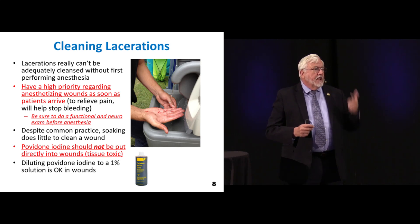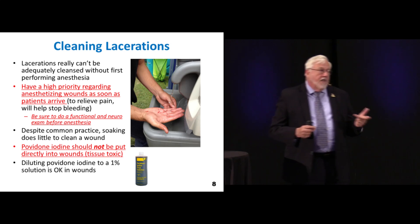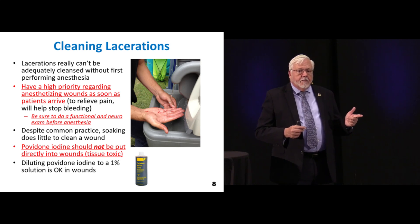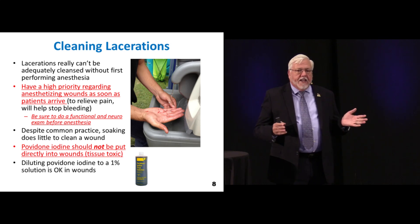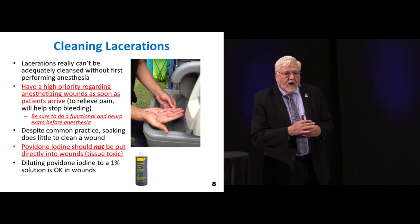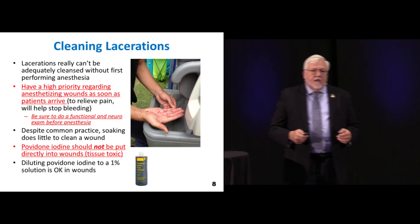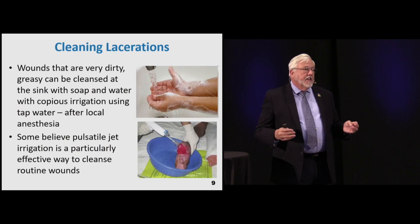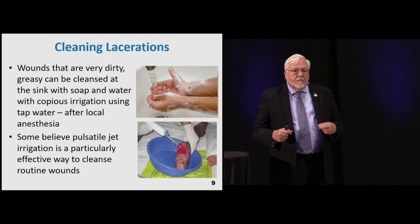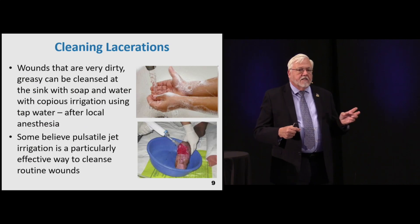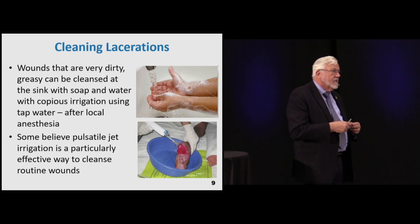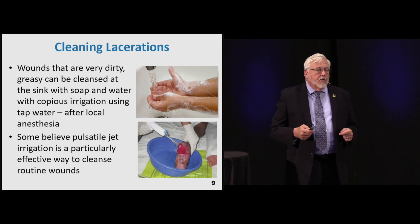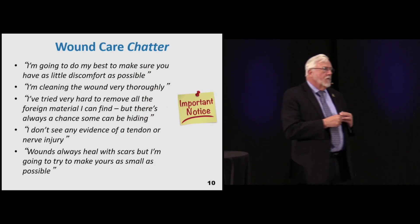Anesthesia is going to relieve pain and help stop the bleeding. We need to do a functional neurological exam before anesthesia. If you do use betadine, dilute it to about 1%. For really dirty wounds, get them over to the sink. Some believe pulsatile jet irrigation is a particularly effective way to get debris out of the wound - it's really valuable to try to remove that debris.